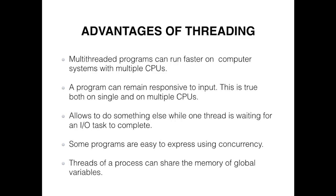The third advantage is that threading allows you to do something else while a thread is waiting for an I/O task or any other task to complete, so the program always remains responsive. The fourth advantage is that some programs are easier to express using concurrency, which leads to elegant solutions that are easier to maintain and debug. The fifth advantage is that threads of a process can share the memory of global variables — if a global variable is changed in one thread, that change is valid for all threads. A thread can also have its own local variables.